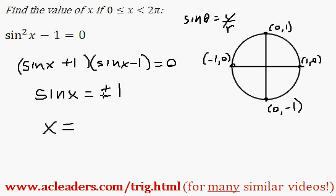So sine of x is going to be 1, positive 1, when x is 90 degrees, or π over 2.